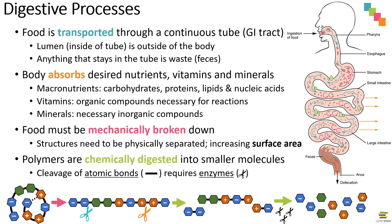Let's start by reviewing the digestive processes that underlie the function of the digestive system, in which nutrients and minerals are absorbed into the body so they can be used by body cells. Food taken in through the mouth needs to be transported throughout the continuous GI tract all the way to the rectum, and anything the body doesn't want is ultimately excreted in feces. As a reminder, feces, while they go through the inside of the body, are never actually internal because the lumen of the GI tract is technically continuous with the external space.